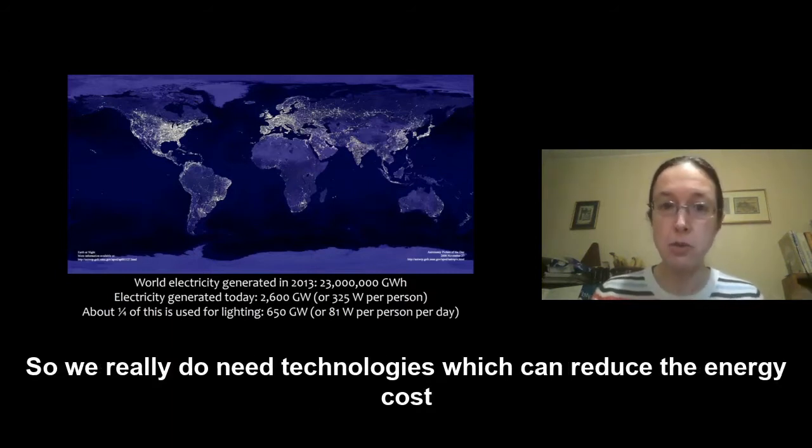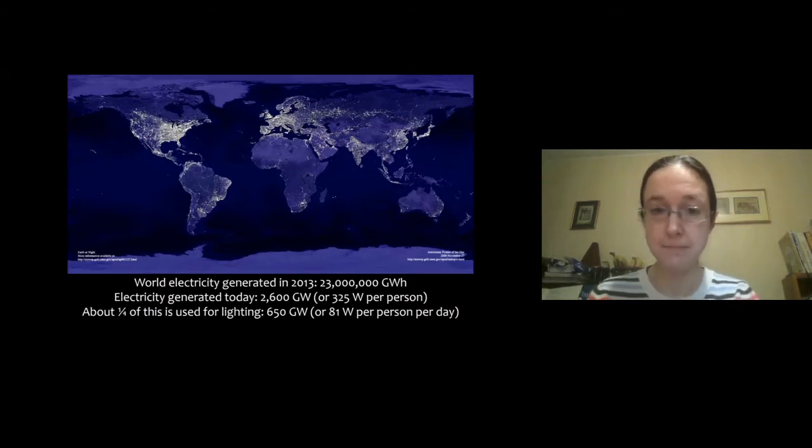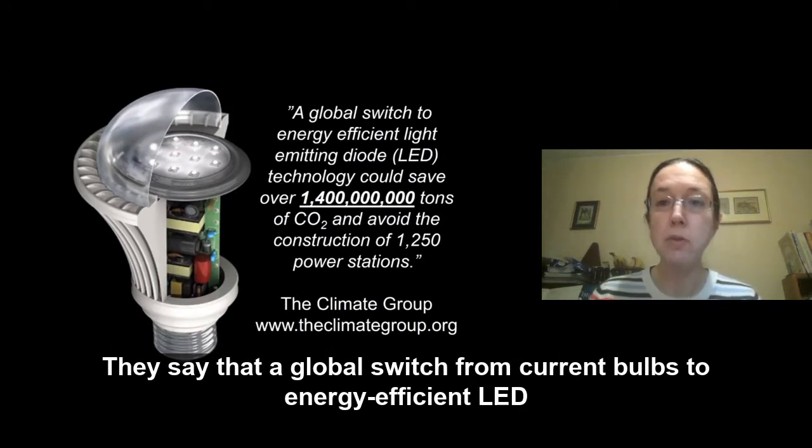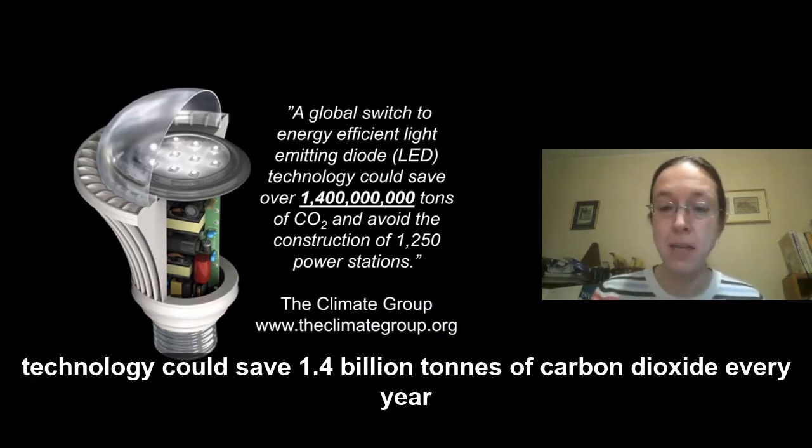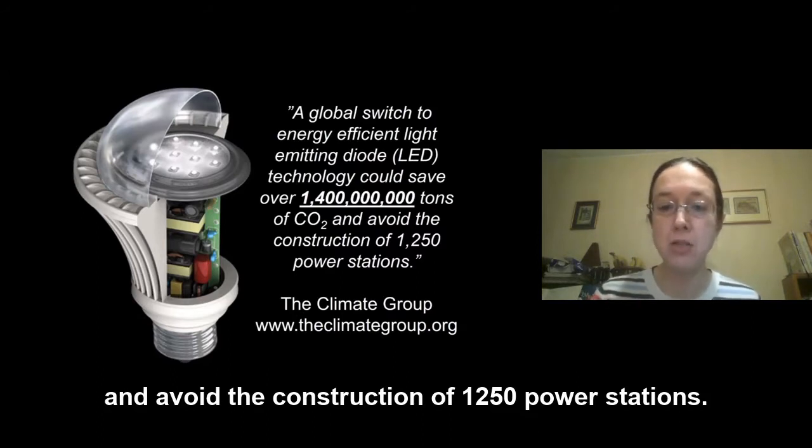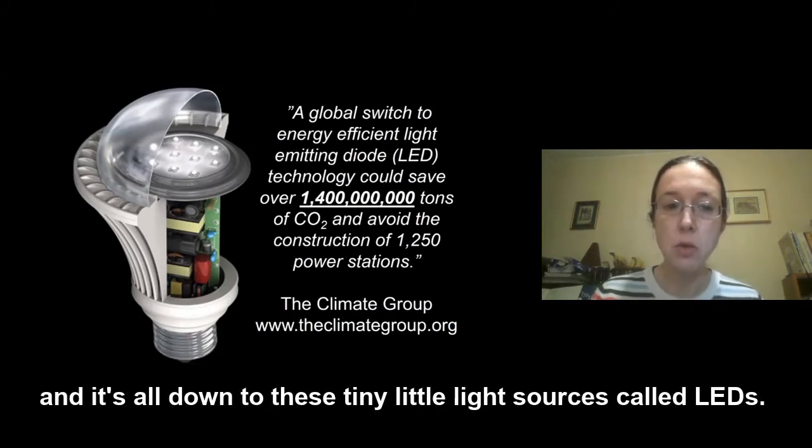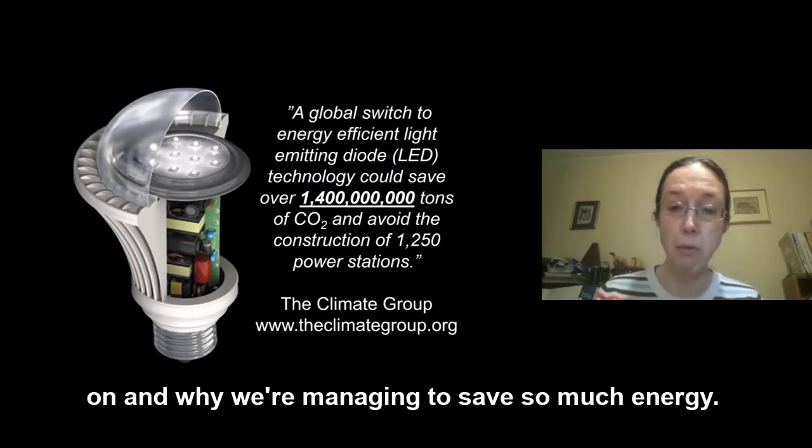So we really do need technologies which can reduce the energy cost of lighting and that's why light emitting diodes, LEDs, are so fantastic. This is a quote from the Climate Group who are trying to improve the sustainability of our technologies. They say that a global switch from current bulbs to energy efficient LED technology could save 1.4 billion tonnes of carbon dioxide every year and avoid the construction of 1,250 power stations. These are massive savings in greenhouse gases, massive reductions in energy usage and it's all down to these tiny little light sources called LEDs. What we're going to do in this talk is get right inside an LED light bulb and find out what's going on and why we're managing to save so much energy.